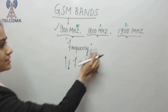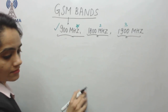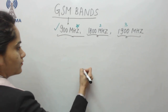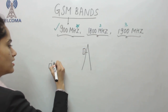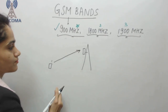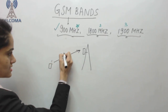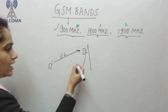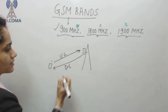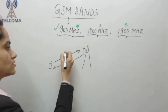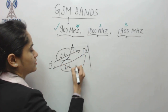Let's discuss the 900 megahertz band. When a user communicates with the network, we call that link the uplink. When the network communicates back to the user, that link is called the downlink. So we require a frequency for uplink and a separate frequency for downlink.